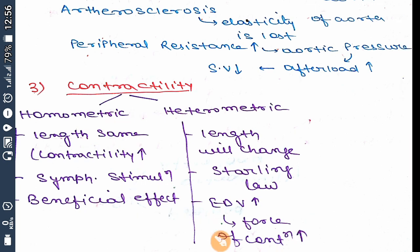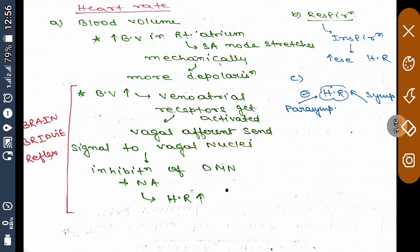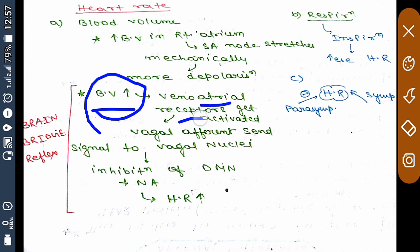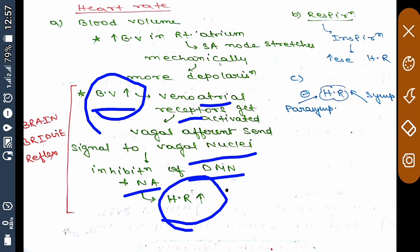Now moving to heart rate. The first mechanism is the Bainbridge reflex. Veno-atrial receptors are mechanoreceptors present at the junction of the veins and the right atrium. When blood volume increases, it activates veno-atrial receptors, which send vagal afferents to vagal nuclei — the dorsal motor nucleus of the vagus (DMNV) and nucleus ambiguus. This inhibits the DMNV, leading to an increase in heart rate because vagal output to the heart decreases.